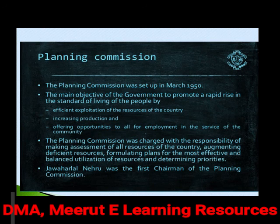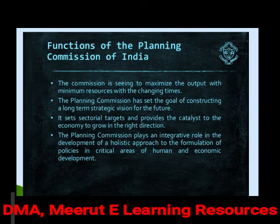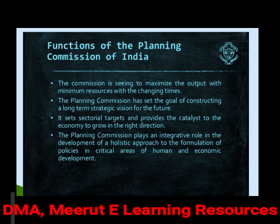Jawaharlal Nehru was the first chairman of the Planning Commission and had to balance resources versus priorities. The initial functions included: maximize output, provide a vision for the future, set targets per sector — agricultural, service, and industrial — and develop a holistic approach to policy formulation in critical areas like human development besides the economy.